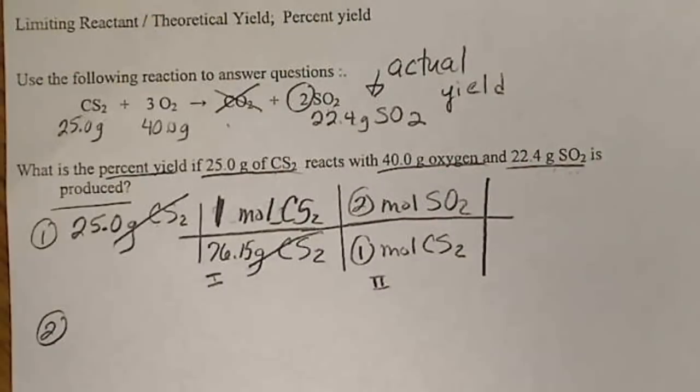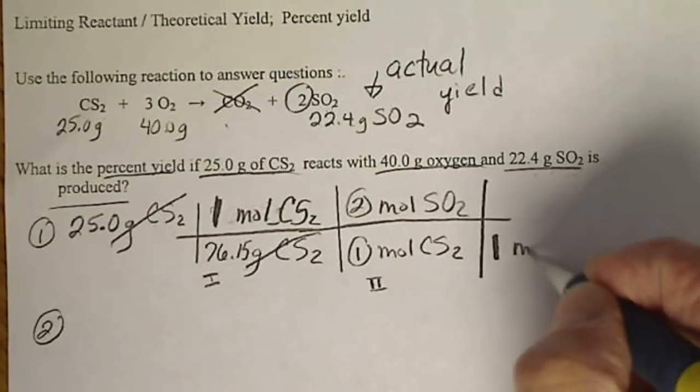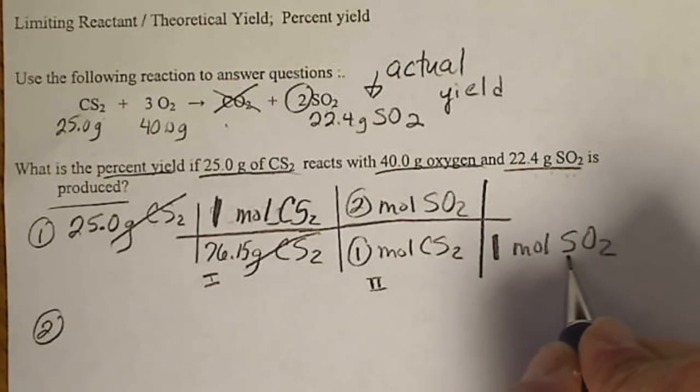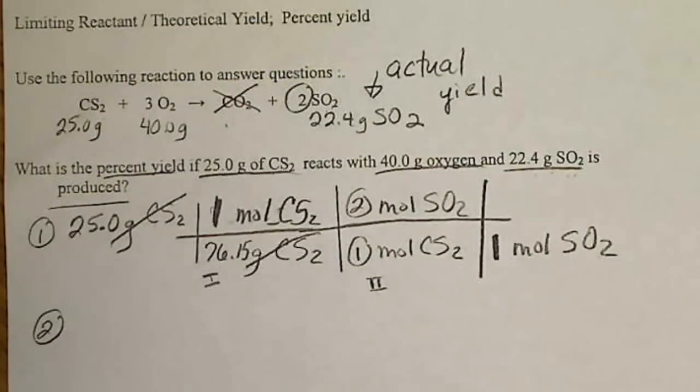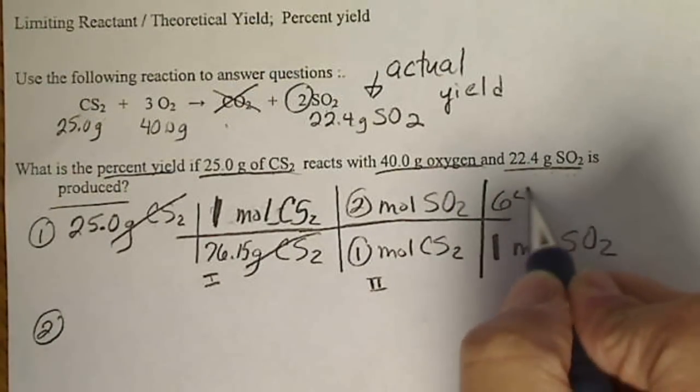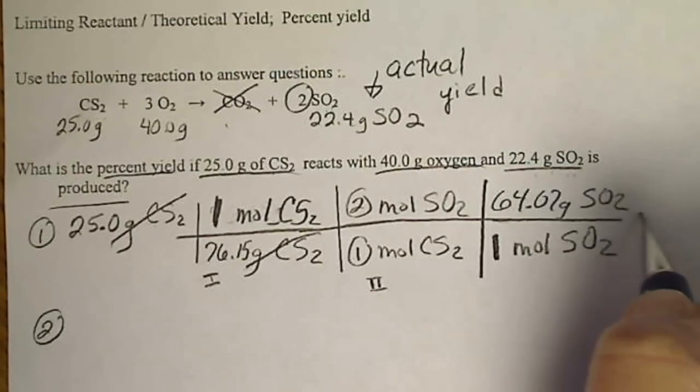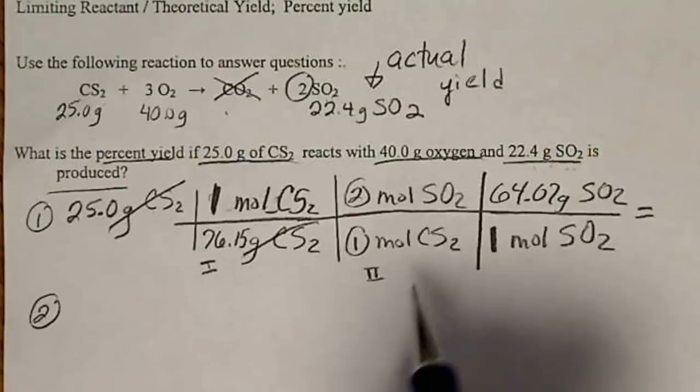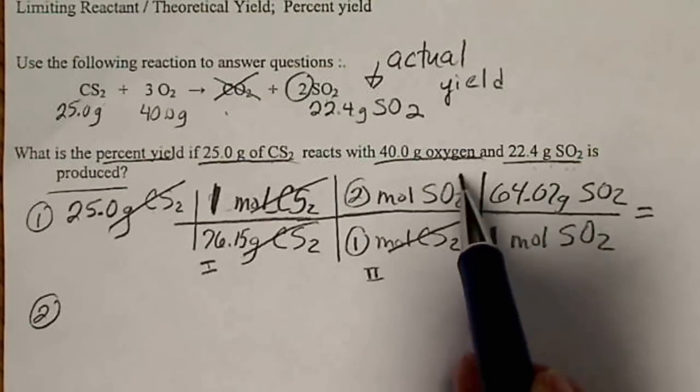Now step 3 is the molar mass of SO2. SO2 is the mass of 1 sulfur plus 2 oxygens. That ends up being 64.07. We'll come back and calculate that in just a minute. I'm going to set up the other problem and make sure all my units cancel.